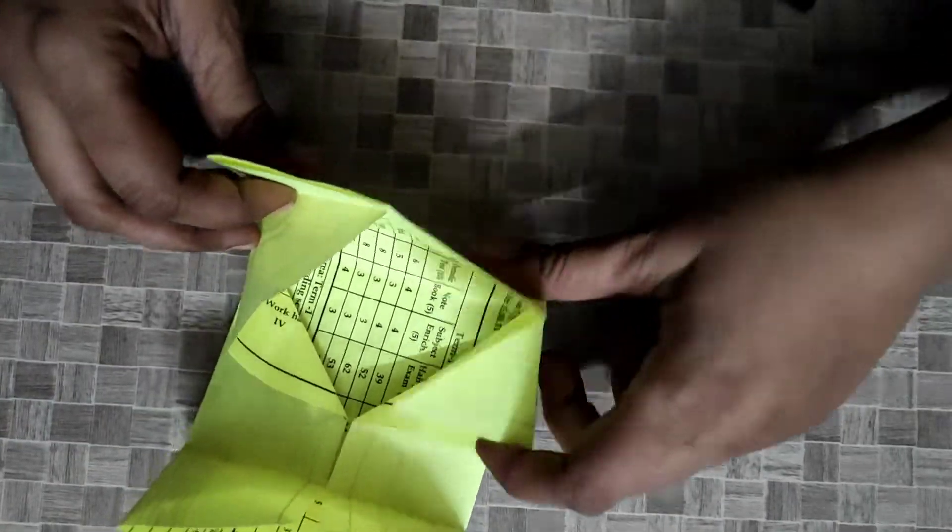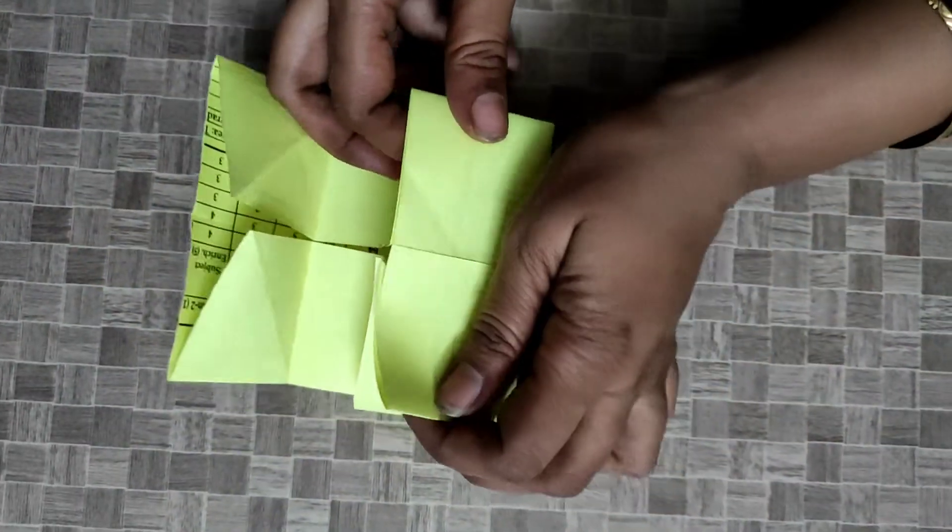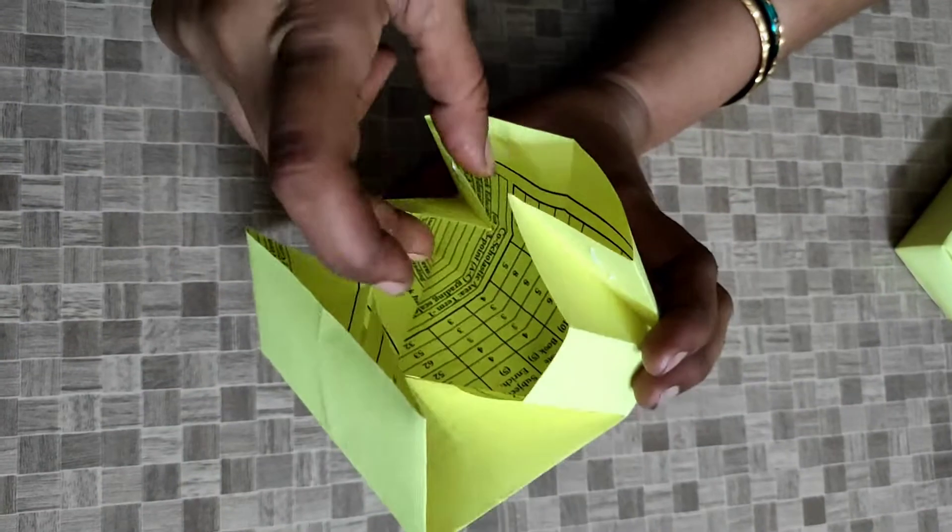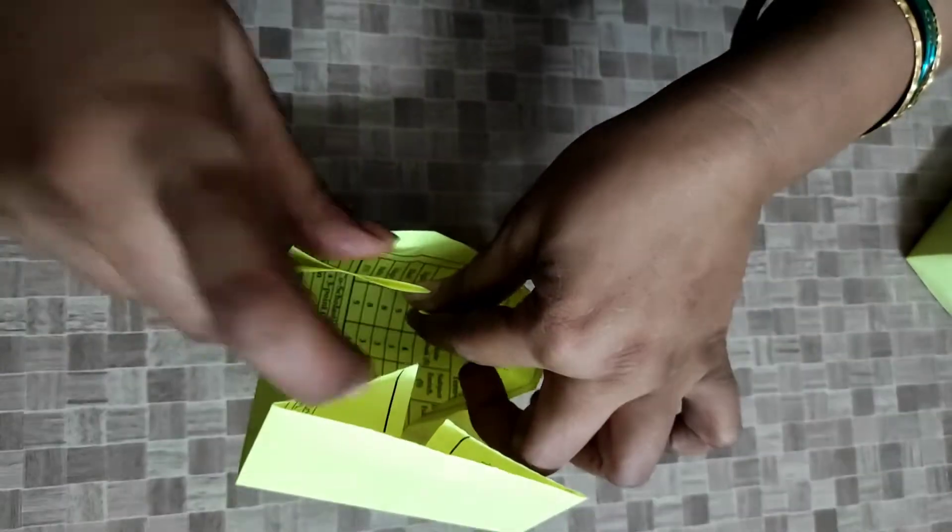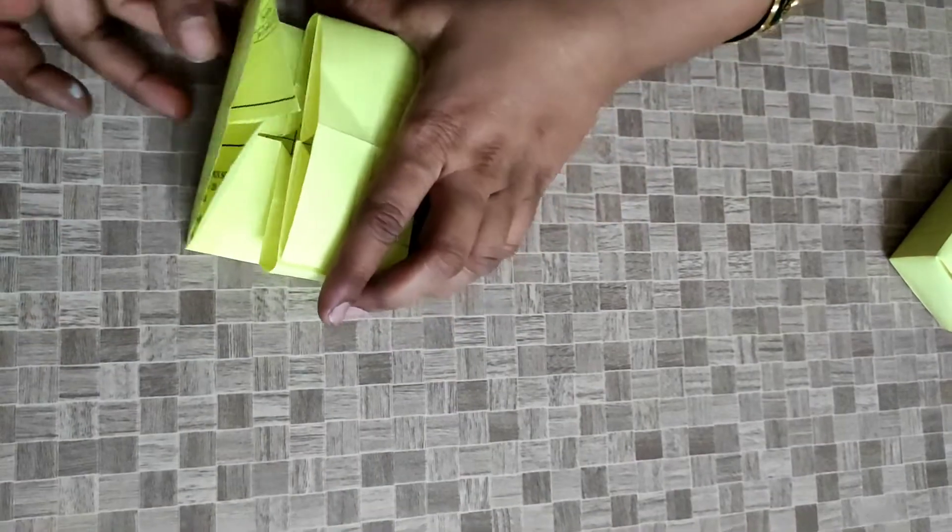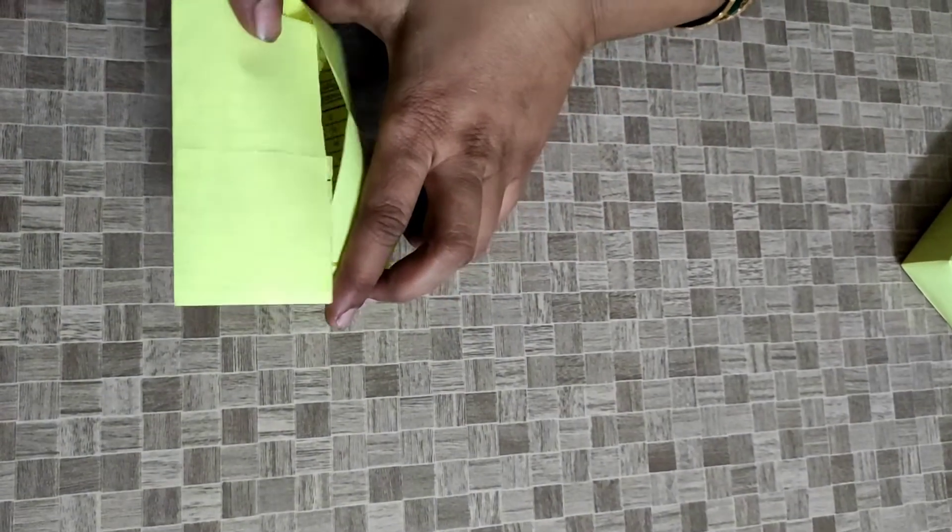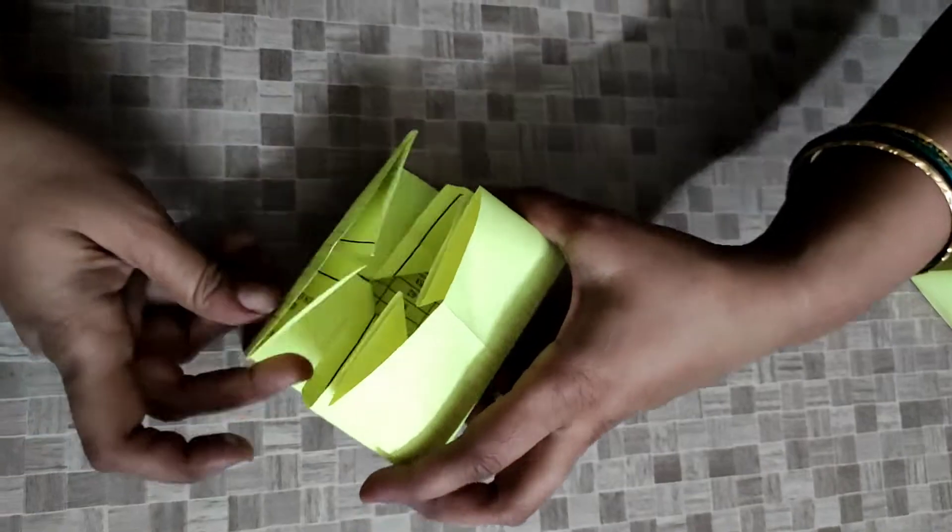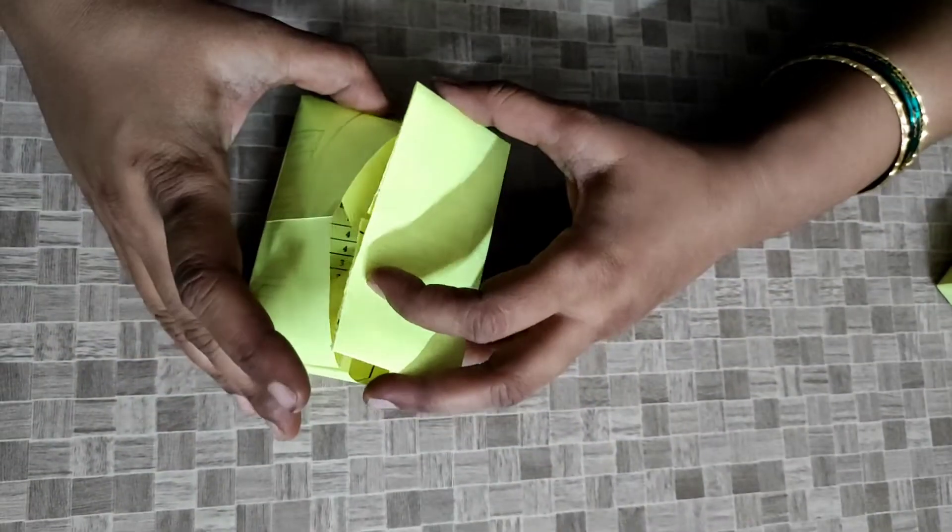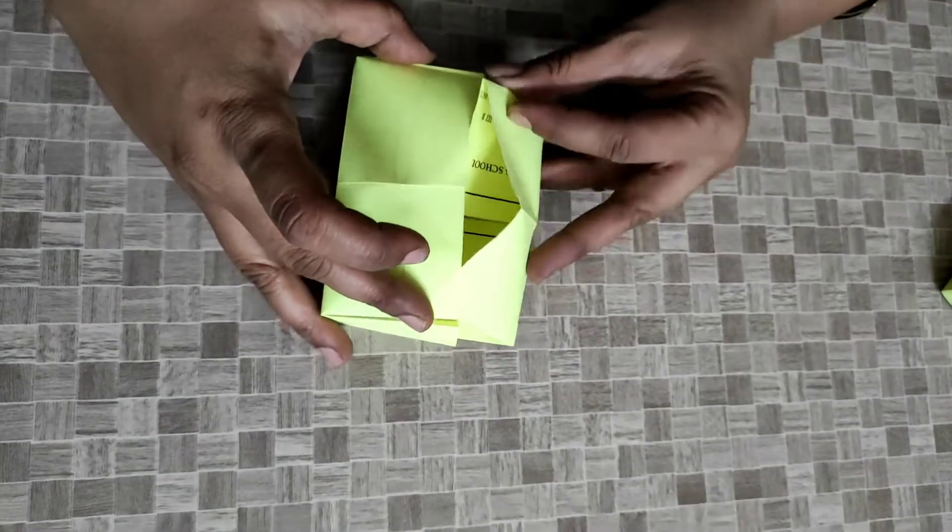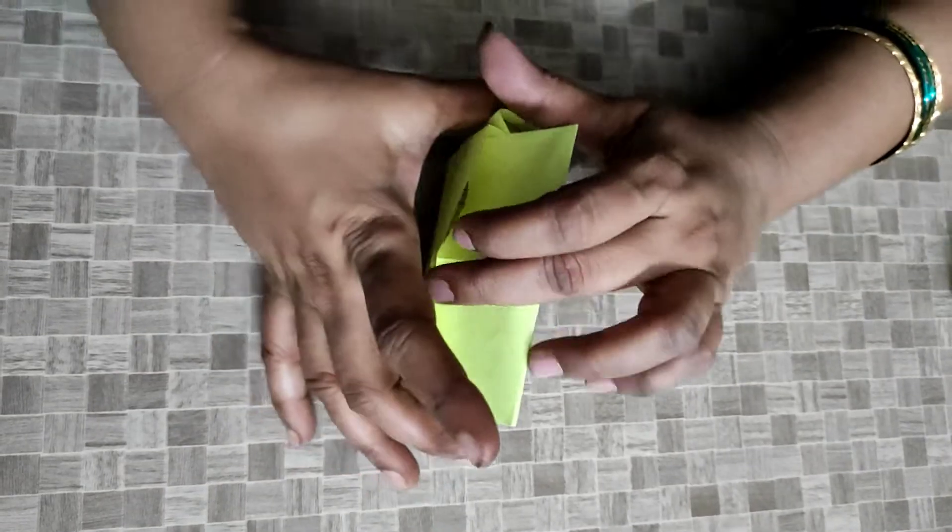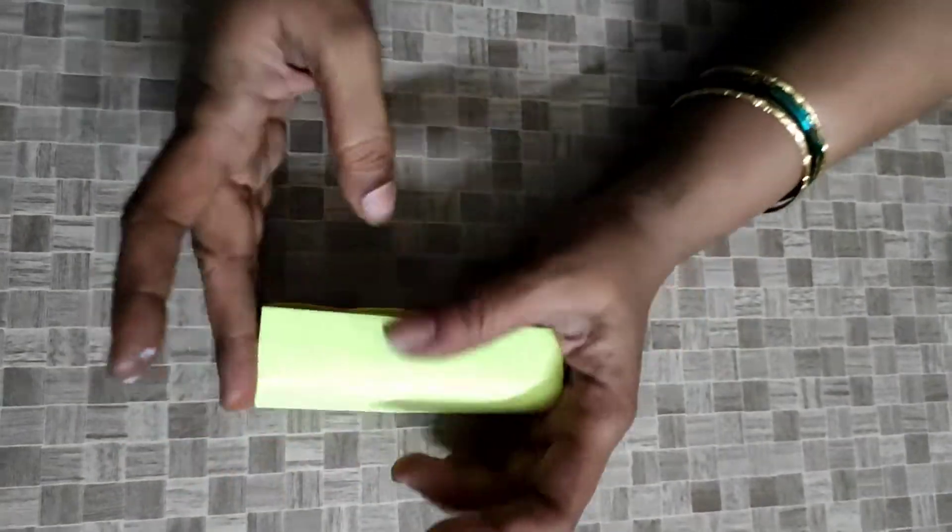Like this, these two. Now this top one, fold it into the pocket. Make sure to fold it well. Pull up the top part, hold it like this. Now put the top into this and it will be sitting in the pocket.